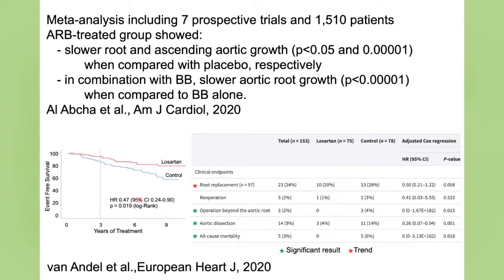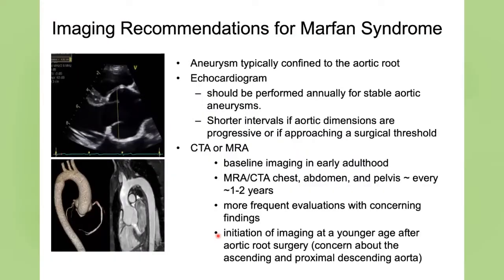A Dutch study recently reported long-term follow-up of their Marfan trial in adults. They had previously shown that ARBs can suppress aortic growth, but here they showed that it also helps prevent deleterious outcomes like operations, aortic tear, and mortality. So it looks like this is really a good step forward in the care of people with Marfan syndrome.